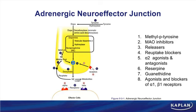Once norepinephrine has been released, there are four things that should happen. One is that norepinephrine diffuses across the synapse and binds to the postsynaptic receptor. This is an adrenergic nerve, so norepi will act on adrenergic receptors — either alpha or beta receptors, depending on the organ.